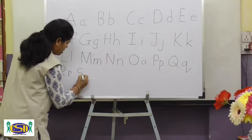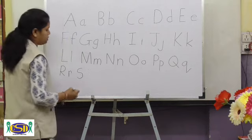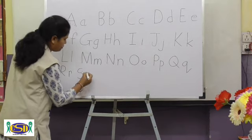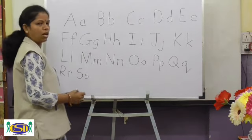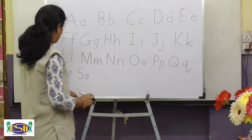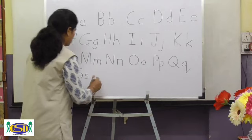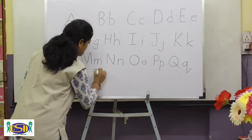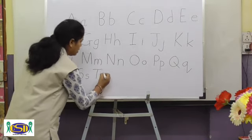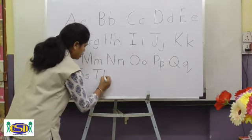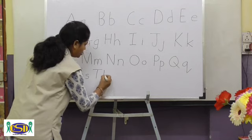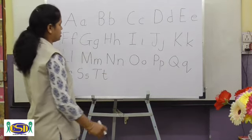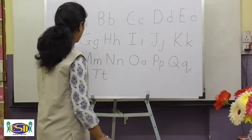Right curve, left curve — capital S. Right curve, left curve — small s. Standing line, slipping line — capital T. Right hook, slipping line — small t.